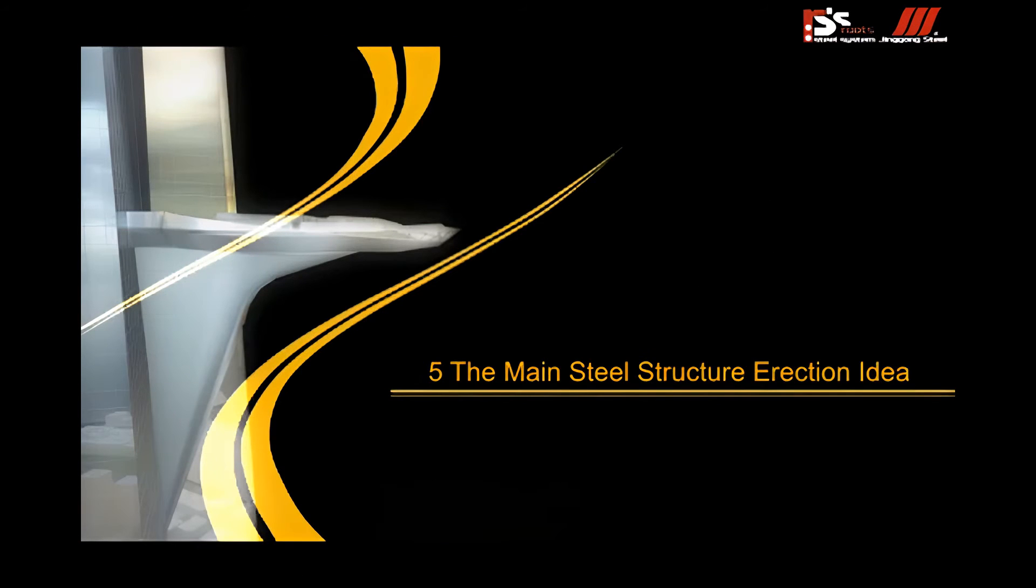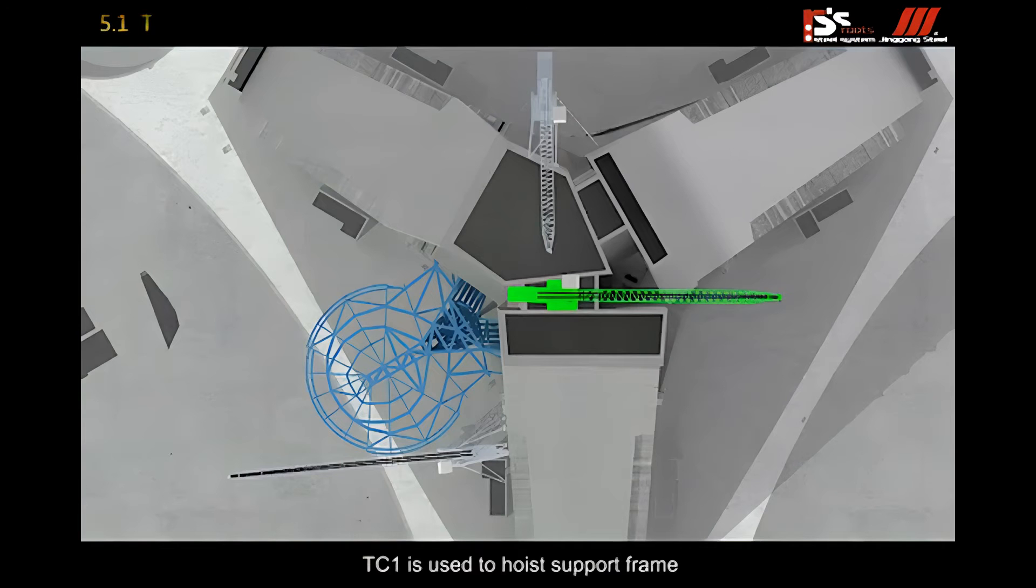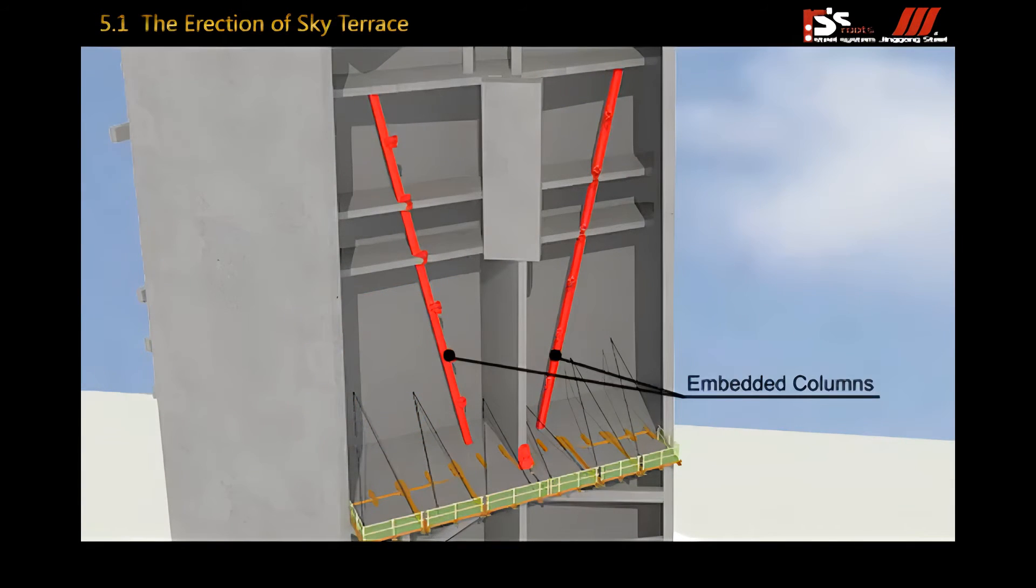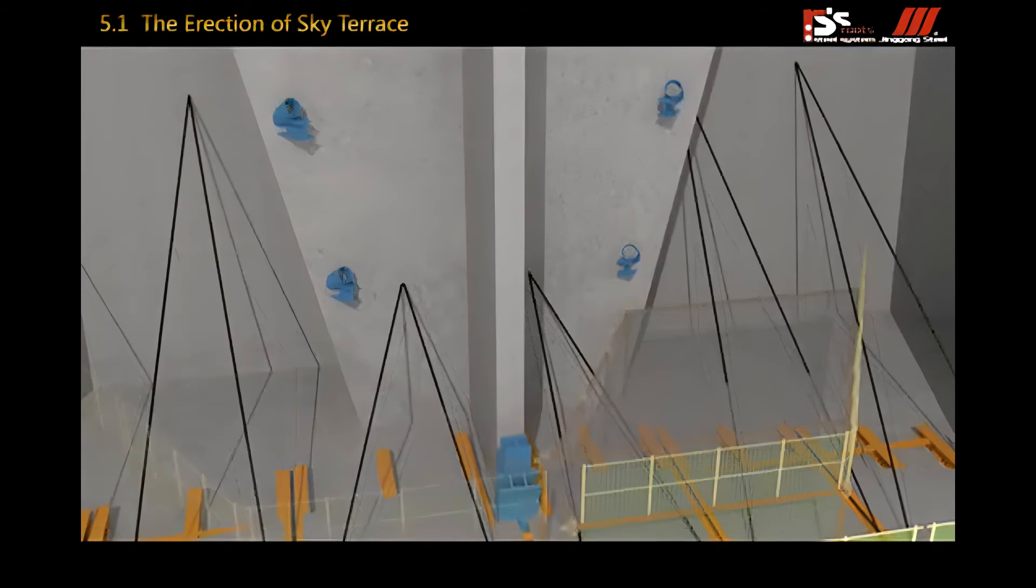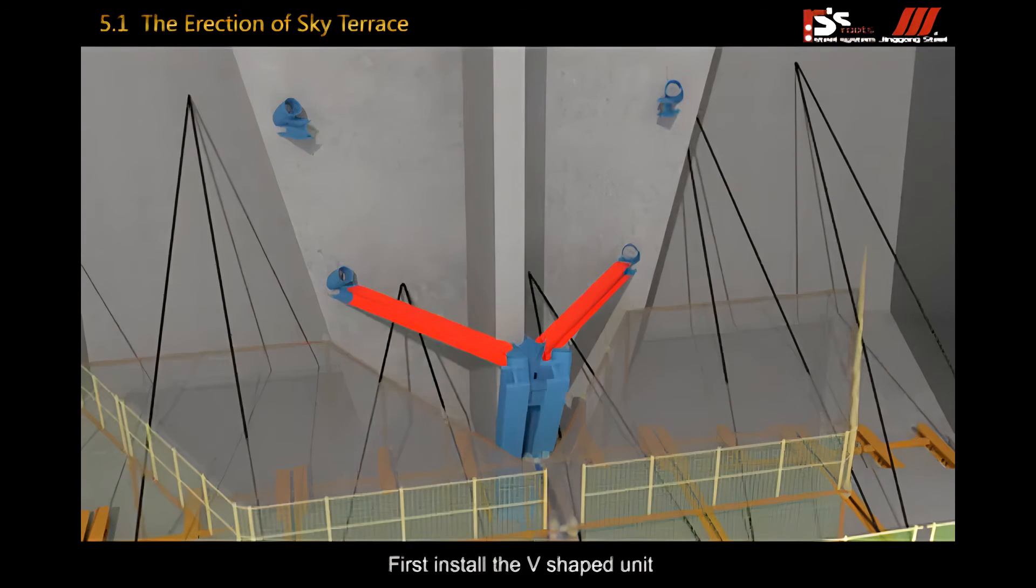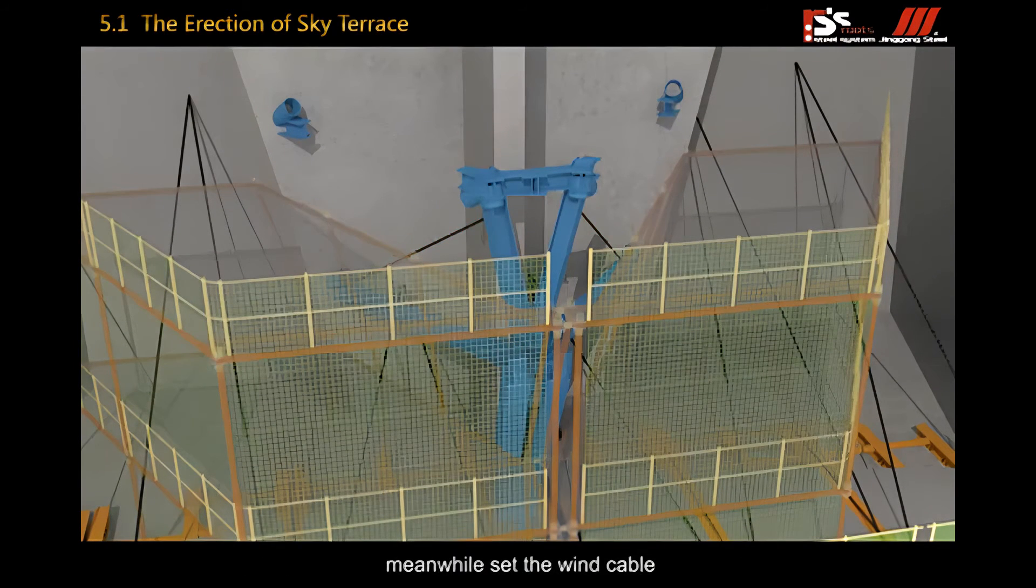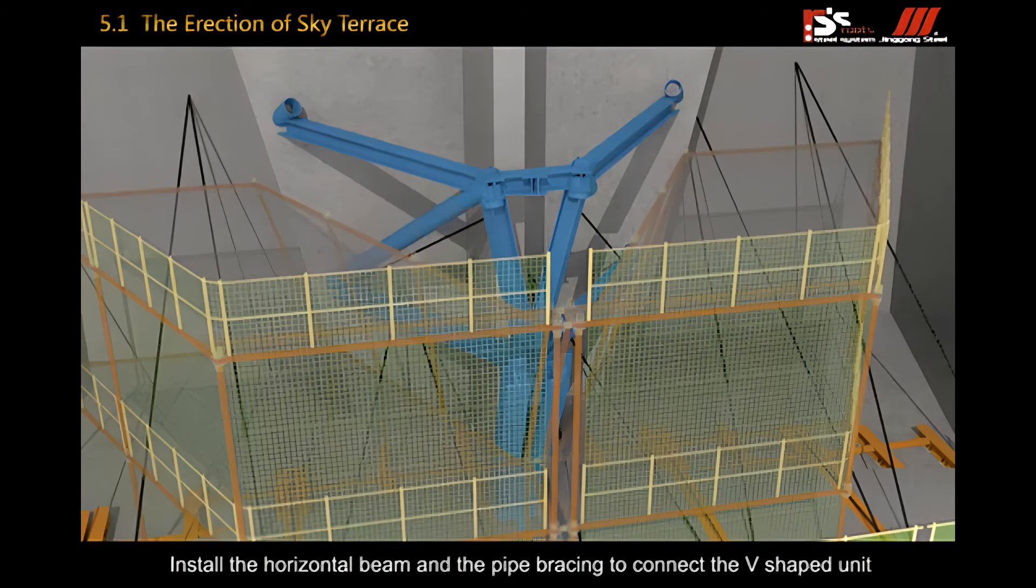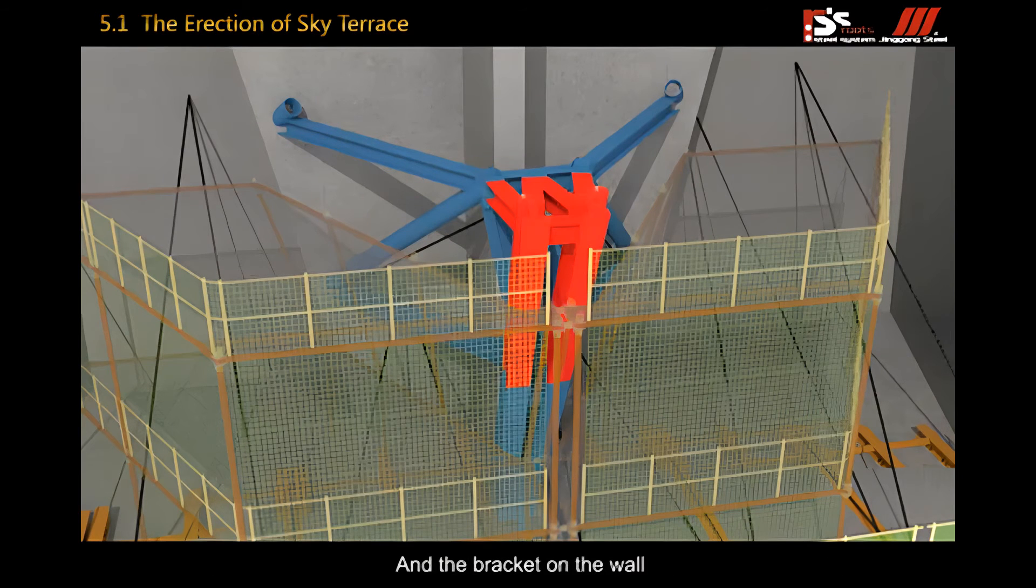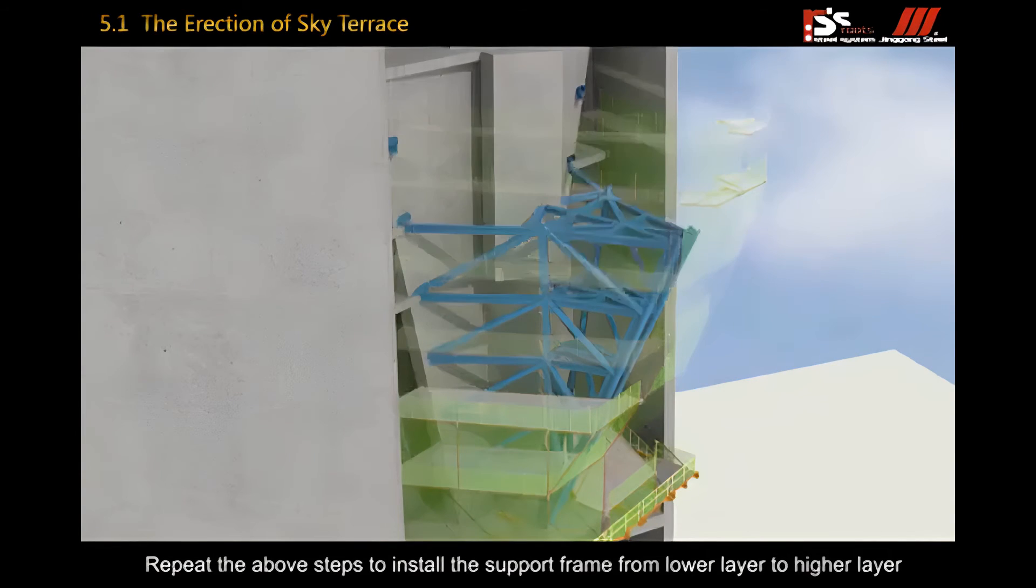Fifth, the main steel structure erection idea. 5.1, the erection of sky terrace. TC1 is used to hoist support frame. First, install the V-shaped unit and connect to the lower component which had been installed. Meanwhile, set the wind cable. Install the horizontal beam and pipe bracing to connect the V-shaped unit and the bracket on the wall. Repeat the above steps from lower layer to higher layer.